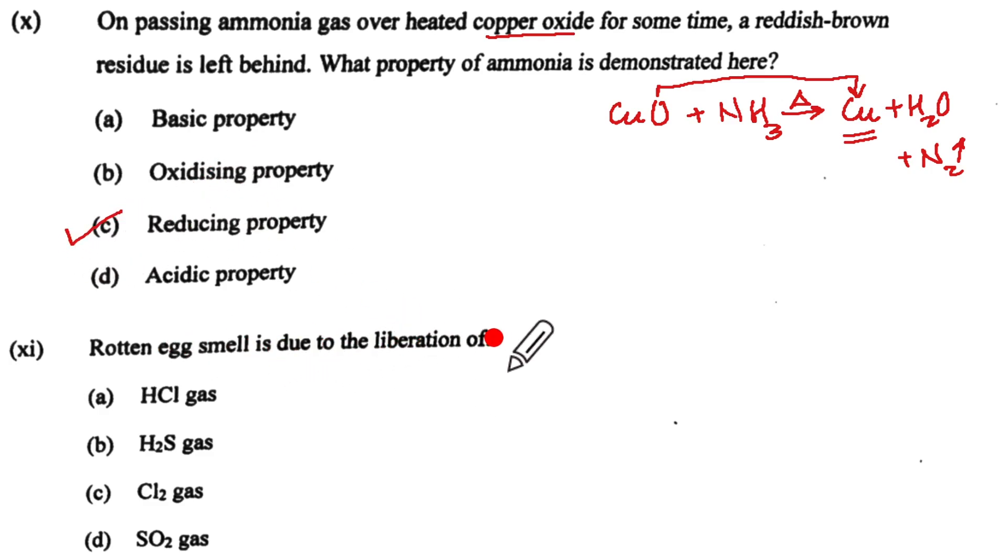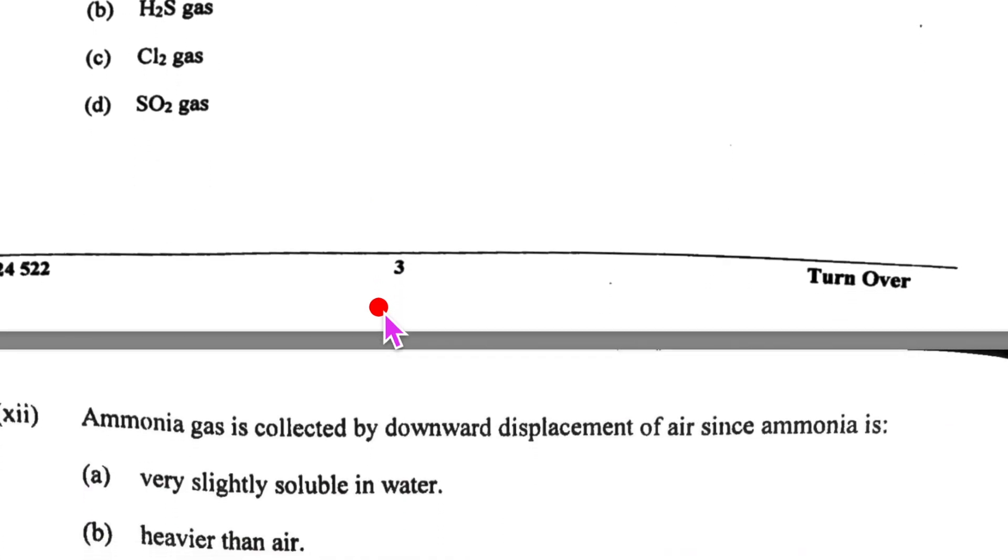Rotten egg smell is due to the liberation of hydrogen sulphide gas. This everybody should know. Alright. So far everybody is understanding and I hope everybody has got full marks so far.